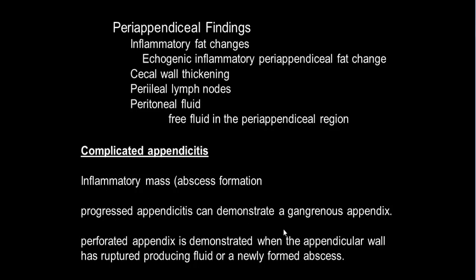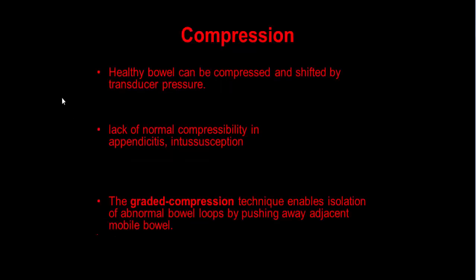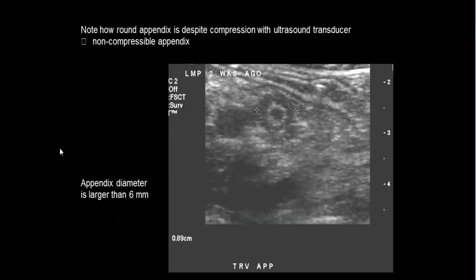Peri-appendicitis can demonstrate a gangrenous appendix. A perforated appendix is demonstrated when the appendiceal wall has ruptured and is producing fluid or a newly formed abscess. Compressibility is the most specific ultrasound sign: healthy bowel can be compressed and shifted by transducer pressure, while lack of normal compressibility indicates diseased bowel. The graded compression technique isolates abnormal bowel loops by pushing away adjacent mobile bowel.